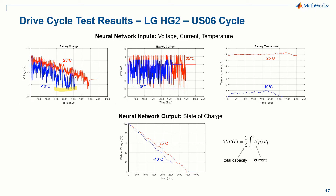It is also important to note that for each drive cycle, the state of charge always starts at the same reference 100% state of charge value at the beginning of a drive cycle. This is achieved by always charging the battery at 25 degrees C with the same constant current constant voltage charging method, even when the drive cycles are performed at lower temperatures such as 0 degrees C. This aspect of test design ensures that the calculated reference SOC value, which is used for training and evaluating the error of the estimation algorithms, is always as accurate and consistent as possible.